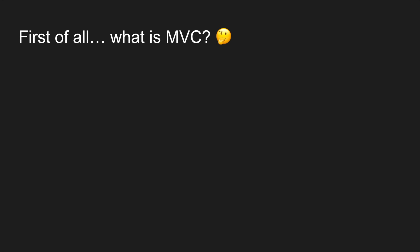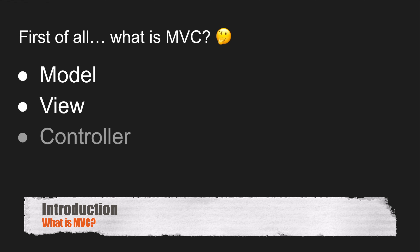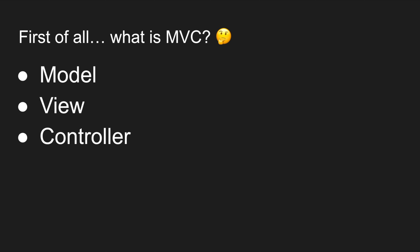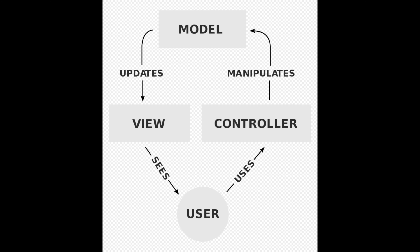Before diving into some code, let's explain a little bit what MVC is and how it is used in CodeIgniter 4 to create web pages. MVC stands for Model View Controller and it is a well-known pattern that is easy to understand if you have already used it before. If you are like me, a graph like this confuses you more, and that's why I will explain it with a simple example.